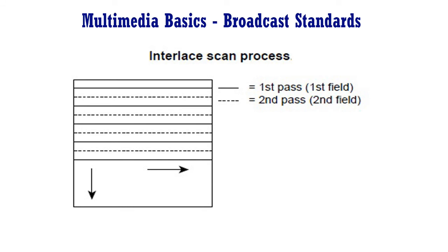For NTSC to deliver 30 frames per second, it must generate 60 fields per second. The rate at which fields are delivered depends on the clocking source. NTSC clocks refresh intervals from AC power. In the United States, AC power runs at 60 Hz, or 60 oscillations per second, yielding 60 fields per second with every two fields yielding one frame. In Europe, AC power clocks at 50 Hz, yielding 50 fields per second, or 25 frames per second.